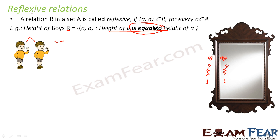Let's say the boy's name is A. Then 'height of A is equal to height of A' — this is the formal example of a reflexive relation.